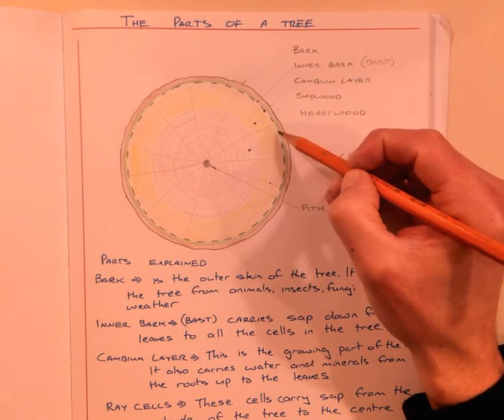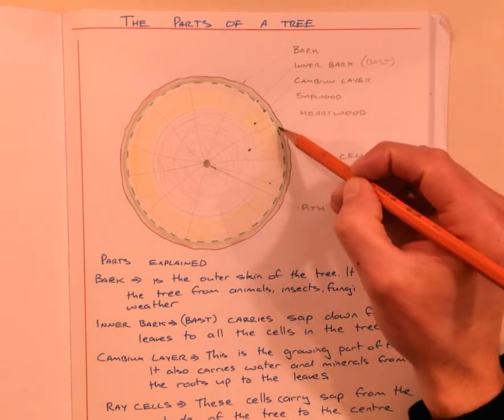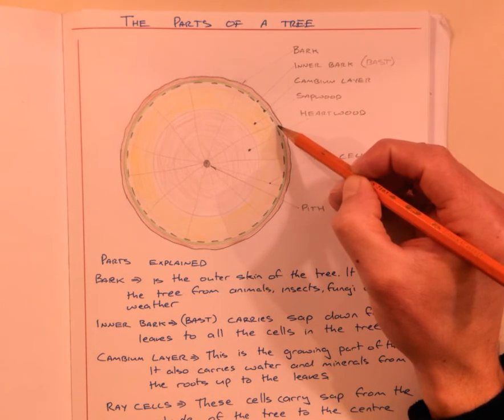After photosynthesis happens in the leaves, this green ring comes in. The green ring here is the inner bark, or the bast, that carries the sap.